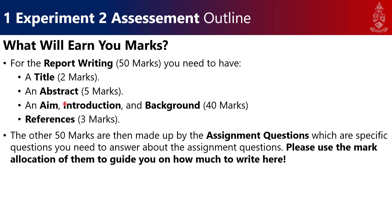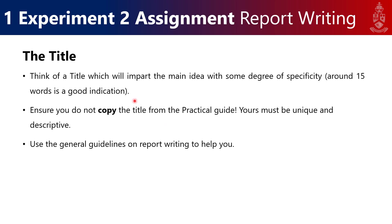The references and title are quite easy. The abstract is a section, and the aim, introduction and background is one long section of about a page or two. For the title, you need to think of a unique title that's not just copied from the practical guide. 'The isomerism of chromium complexes' is not acceptable. Include words like kinetics, isomerization kinetics, UV-Vis spectra, or the study of chromium isomerism using UV spectra. Keep it to around 15 words. You can use the general guidelines at the end of your prac guide.